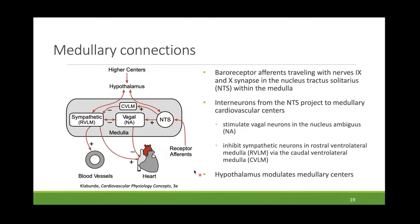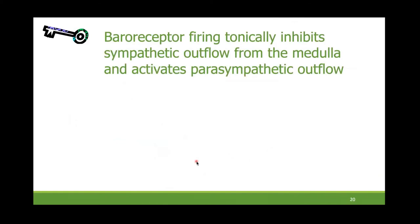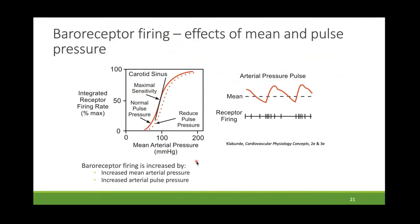The hypothalamus also plays a role, with connections to these medullary regions providing integrated responses controlling different medullary centers. A key concept: baroreceptor firing tonically inhibits sympathetic outflow from the medulla and activates parasympathetic outflow. The carotid sinus baroreceptor — and similarly the aortic arch receptors — shows that at around 60 mmHg, these receptors are quiescent and not firing.